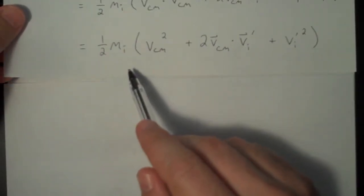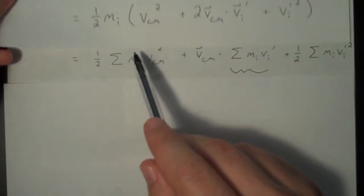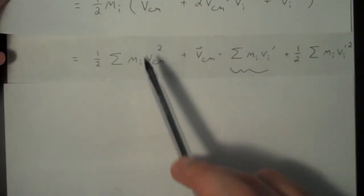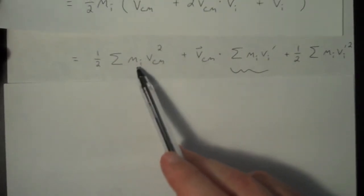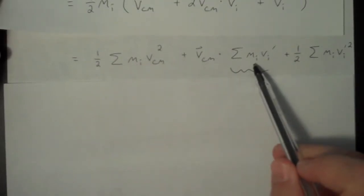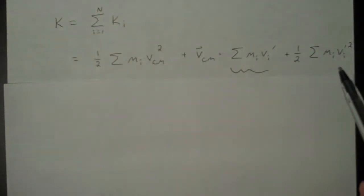So just a reminder, here was our starting point for Ki. And now we're just summing over i. So here we have a summation of mi. Here we have a summation of mi. Here we have a summation of mi.